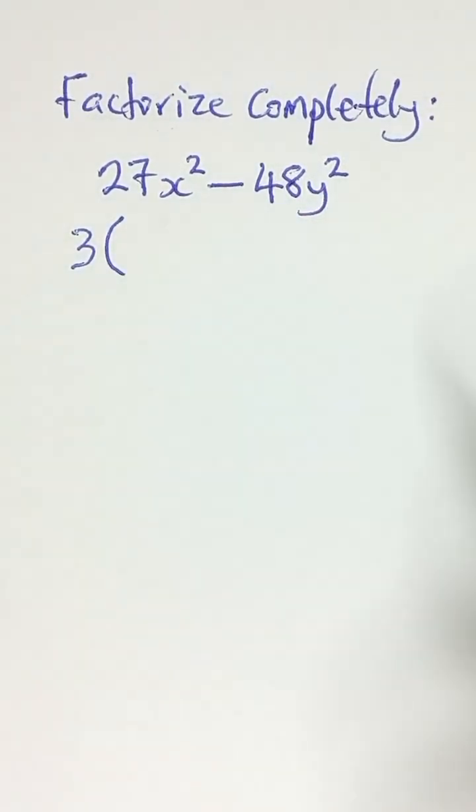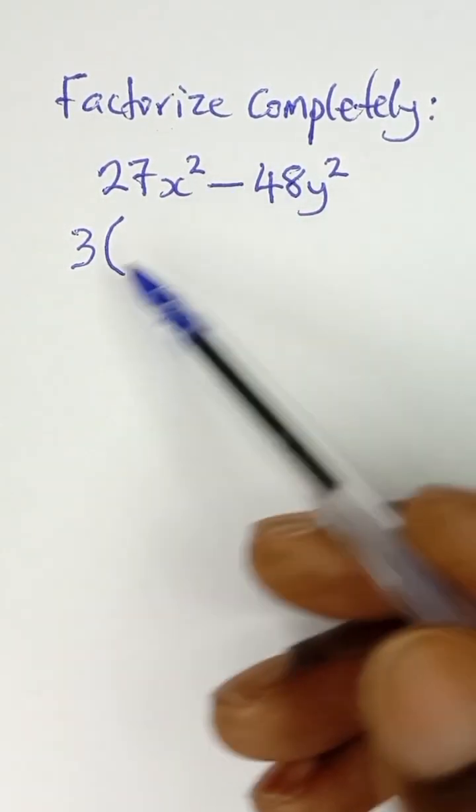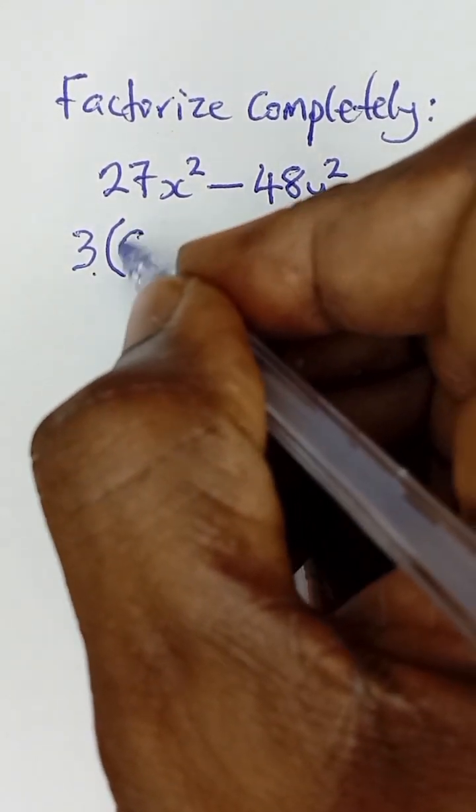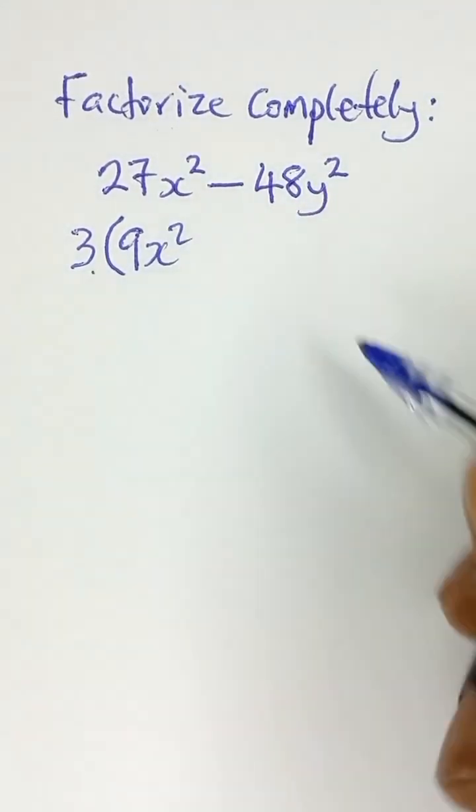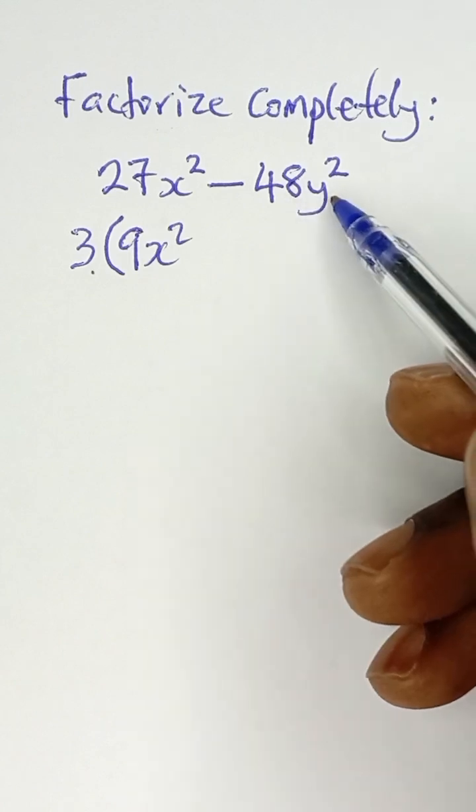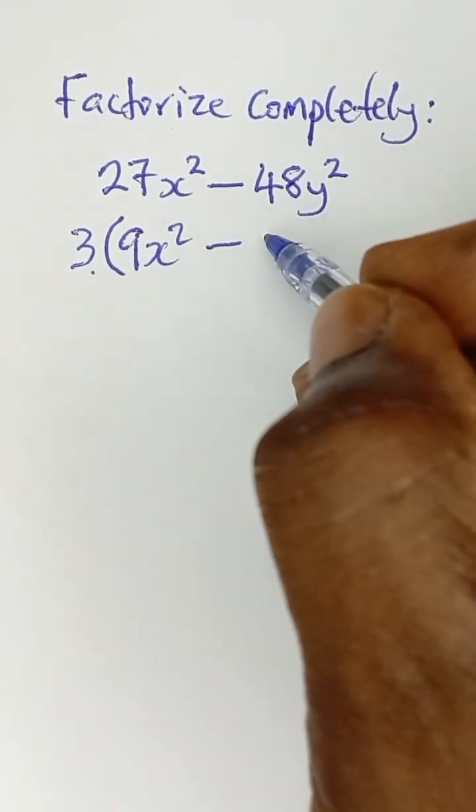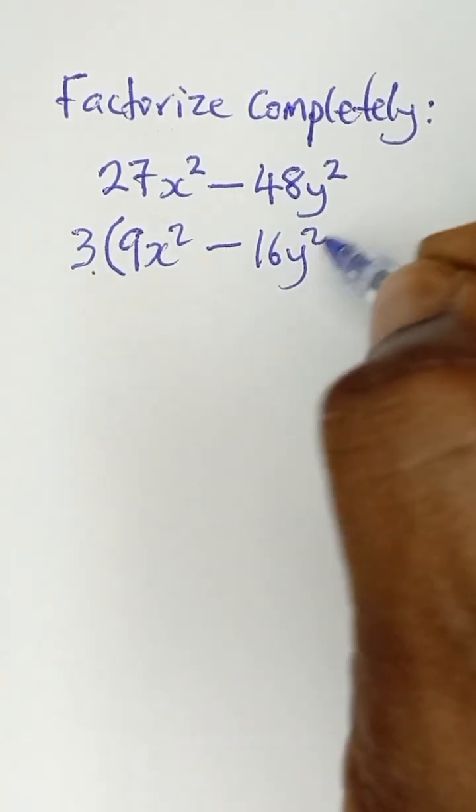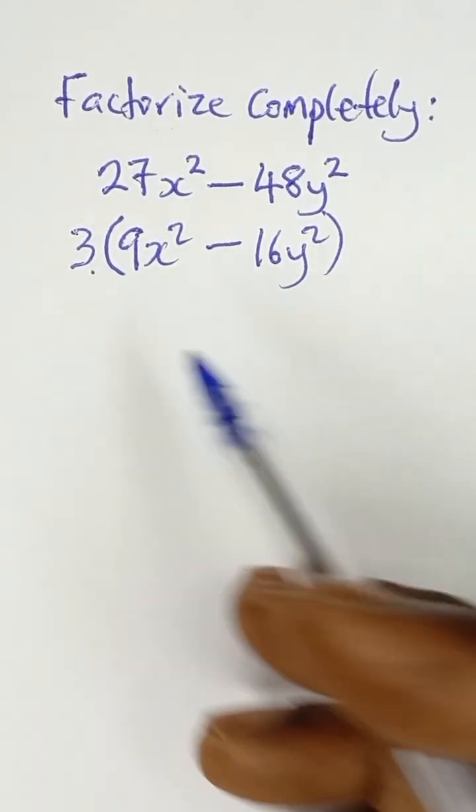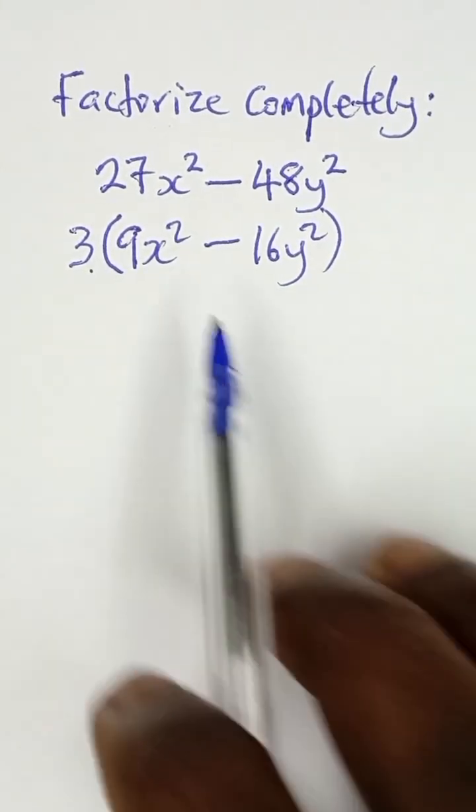So 27x² divided by 3, I'll be left with 9x², and then 48y² divided by 3, I'll be left with 16y². Now this factoring is not yet complete because the terms inside the bracket can still be factored.